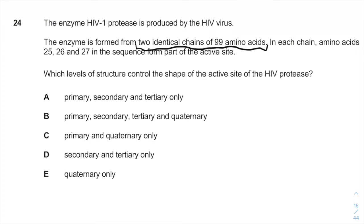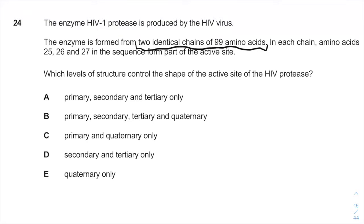So immediately you have viruses, you have HIV, you have enzymes — and all of these different things are meant to confuse you from finding the logic behind this question. The actual question is: which levels of structure control the shape of the active site of the HIV protease? So let's quickly go through the different levels of protein organization.